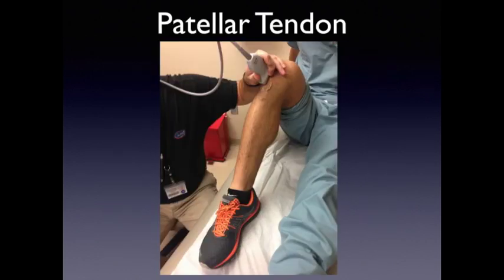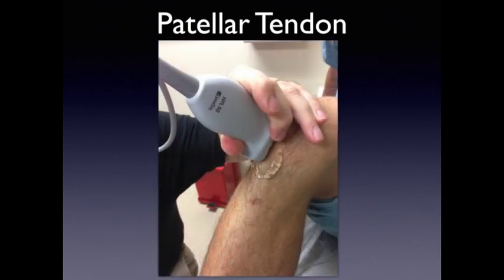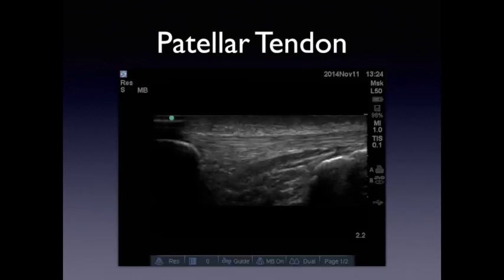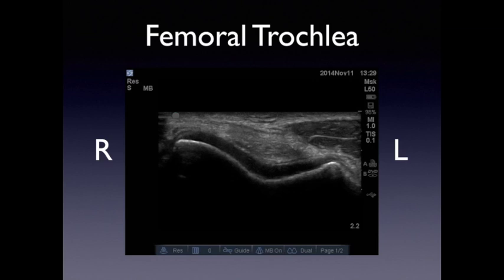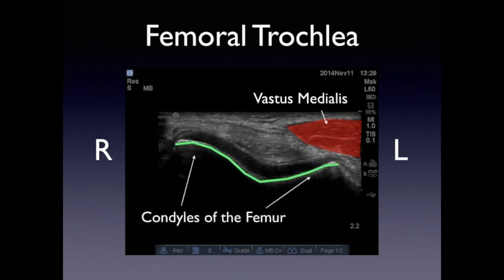We're now going to look at the patellar tendon, scanning in a sagittal orientation with the transducer placed longitudinally. On the left side of the screen is the superior portion — the patella — and inferiorly the tibia, with all the fibers of the tendon visible. If we move to a transverse position near the distal femur, we'll be able to see the trochlea of the femur and a segment of the vastus medialis. Hyperechoically you see the condyles of the femur and then the articular cartilage.